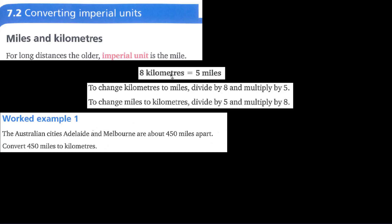If 8 kilometers equals 5 miles, then to convert kilometers to miles, divide the given value by 8 then multiply by 5. If you want to convert miles to kilometers, divide by 5 then multiply by 8.